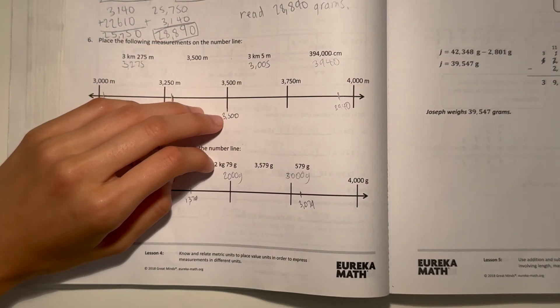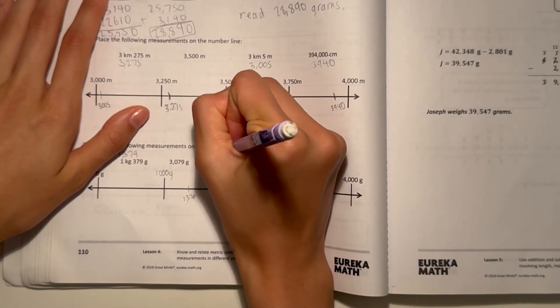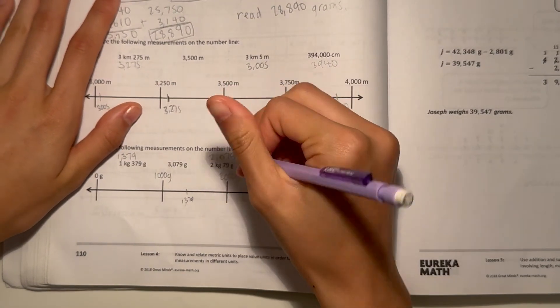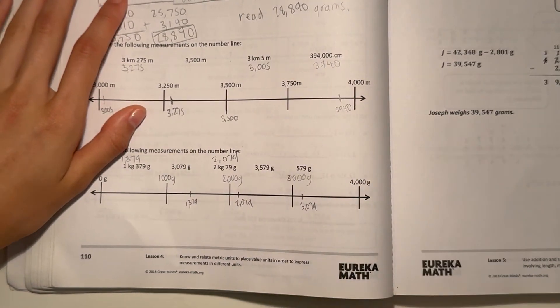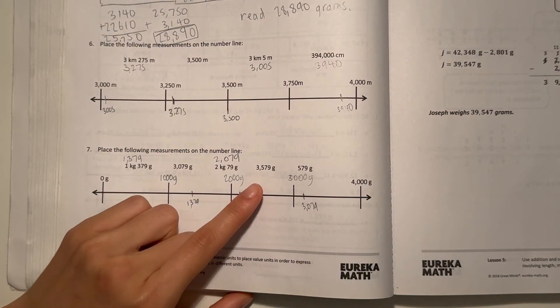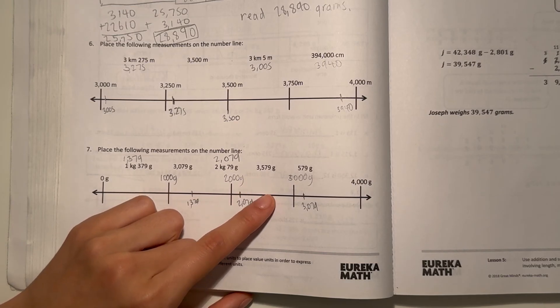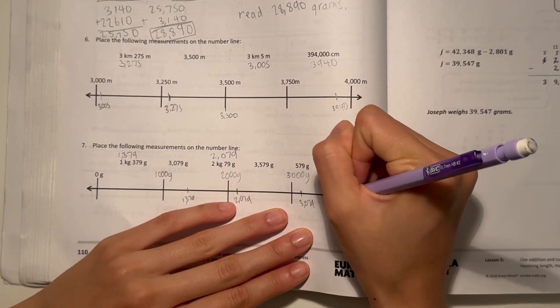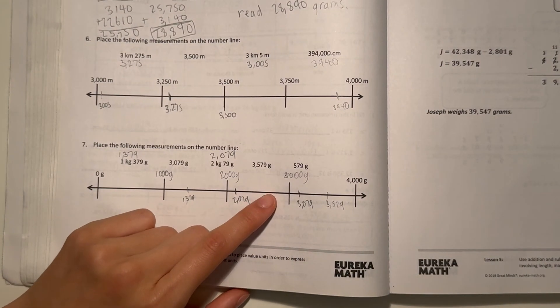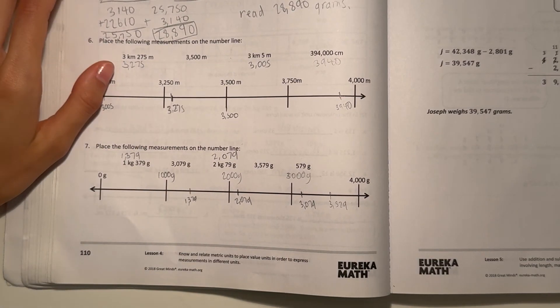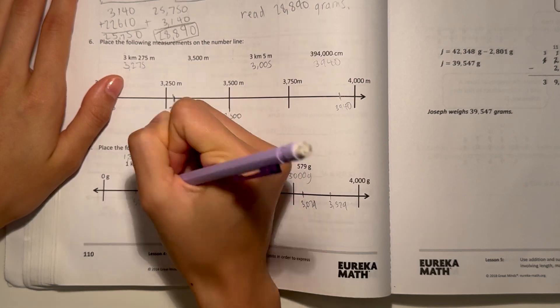Alright, and now 2 kilograms, 79 grams, times 1,000, that's 2,079. And 2,079 would go around over here. 3,579 grams is already converted, and then we go over here. Alright, and now 579 grams would go roughly over here. So yeah.